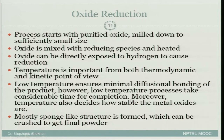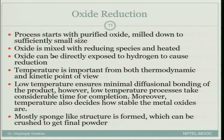The oxide reduction process starts with purified oxide milled down to sufficiently small size, then mixed with a reducing species. For example, to get pure iron, you start with pure iron oxide and reduce it to get iron powder. The oxide can be directly exposed to hydrogen to cause reduction. Temperature is important from both thermodynamic and kinetic points of view.